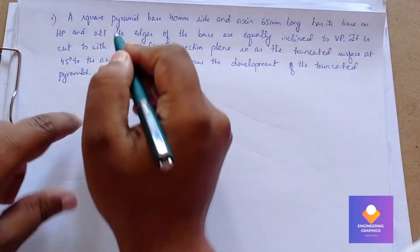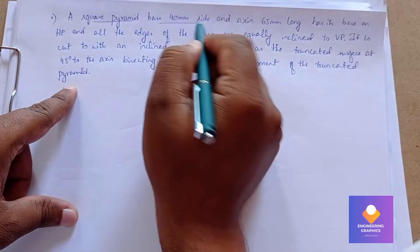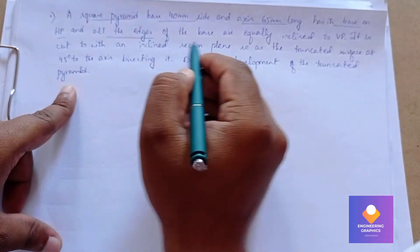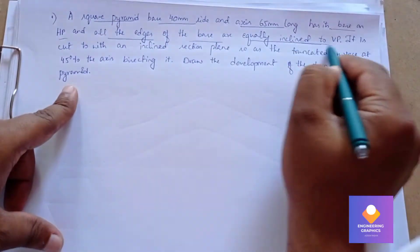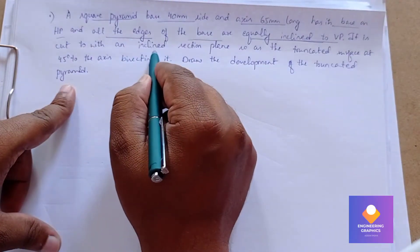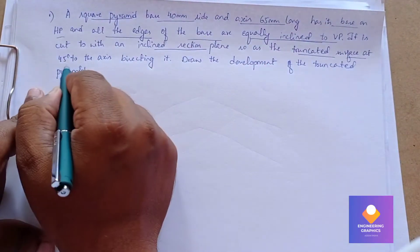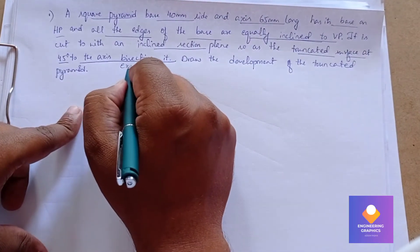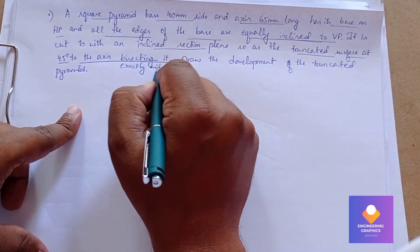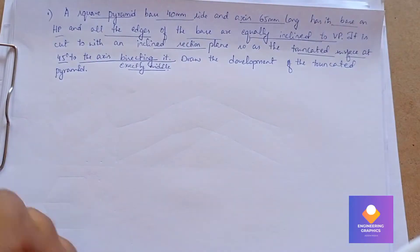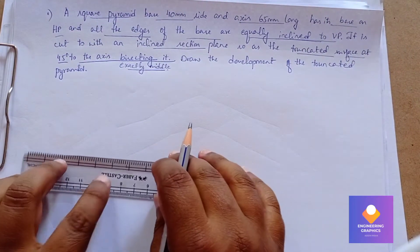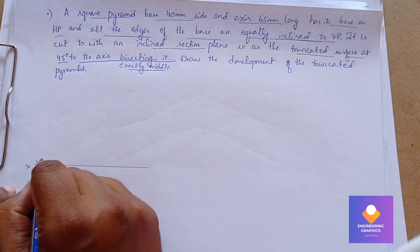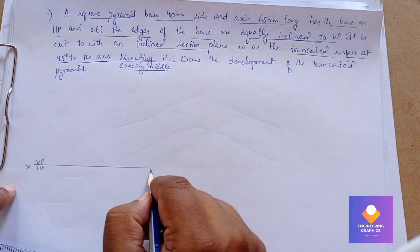A square pyramid with a base of 40mm side and axis 60mm length has its base on the HP and all the edges of the base are equally inclined to VP — meaning we need to construct it in the corner position. It is cut by an inclined section plane such that the truncated surface is at 45 degrees to the axis, bisecting it — meaning cutting exactly at the middle of the axis. First, we draw an axis line.